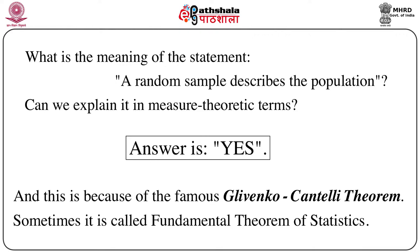Frequently in statistics we make a statement like: a random sample describes a population. That means a random sample can be treated as a very good representative of the population — it contains many or almost all features of the population and lots of information about the population parameters. This description is very nice, but can we explain it in terms of measure theory or probability theory? Because if we can, we can use lots of tools and techniques already developed in probability theory to decipher many patterns and information from the data.